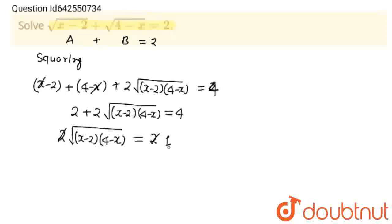Now I am again going to square both sides. This will become x minus 2 into 4 minus x is equal to 1 and when here I will multiply this will become minus x square plus 4x minus 8 plus 2x is equal to 1.